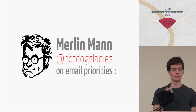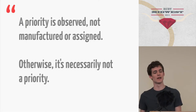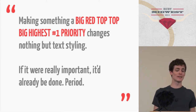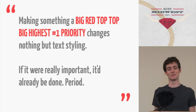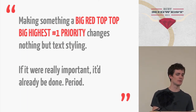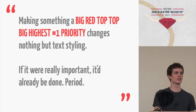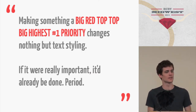Merlin Mann wrote an awesome post on email priorities. He says: priorities are not manufactured or assigned — otherwise it's necessarily not a priority. Making something a big red number-one priority changes nothing but text styling. If it were really important, it would already be done, period. I think that's really important. He's talking about email, but the same is true for issues, prioritization, dragging and dropping all these issues to prioritize and stuff. Think about if you actually need that. If you do, that's cool. But if you don't need it, you're wasting a lot of time. Resist adding meta work — it gets in the way of real work.